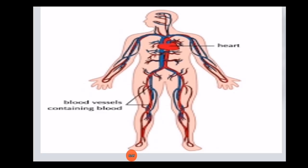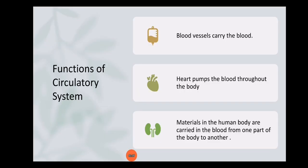Here is an overview of the human circulatory system. We have the heart in the center and the blood vessels that contain the blood. Here are some of the functions of the circulatory system.